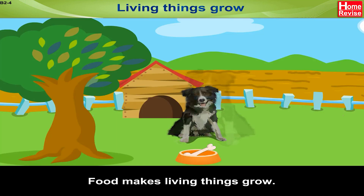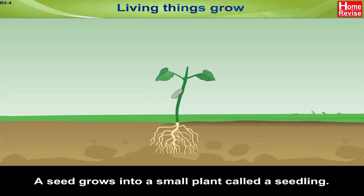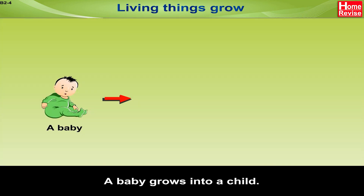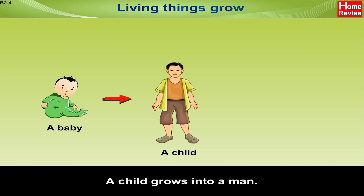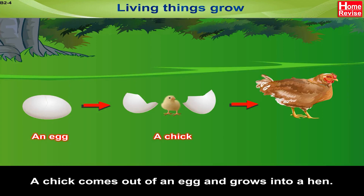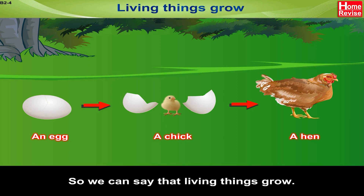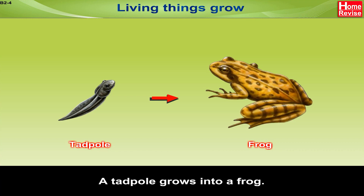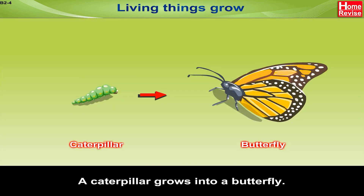Living things grow. Food makes living things grow. A seed grows into a small plant called a seedling. The seedling grows into a big plant. A baby grows into a child, and a child grows into a man. A chick comes out of an egg and grows into a hen. A tadpole grows into a frog. A caterpillar grows into a butterfly.